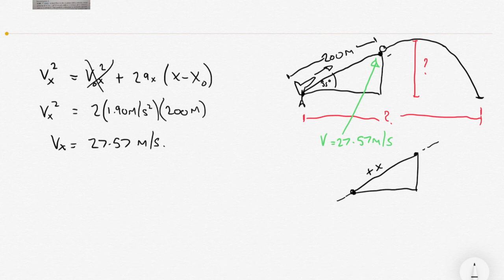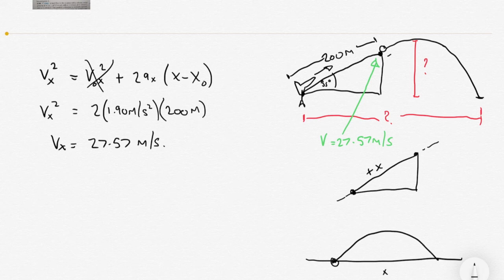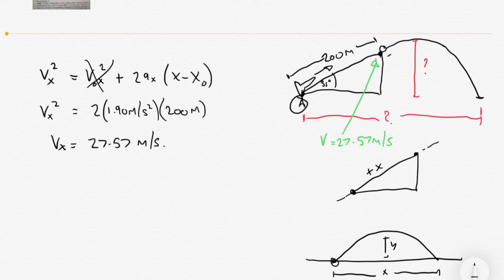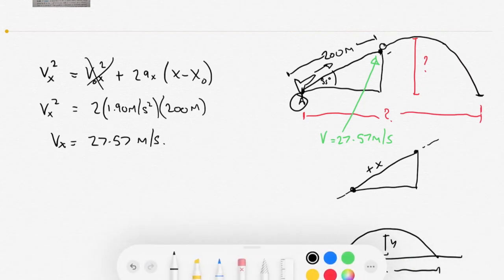Now we're solving the projectile part of the problem, but it's a slightly different type because the launch point isn't at ground level. The question asks how far the projectile travels with respect to point A, and the rocket is also launched from a height above the ground, so we need to be extra careful with our coordinates.